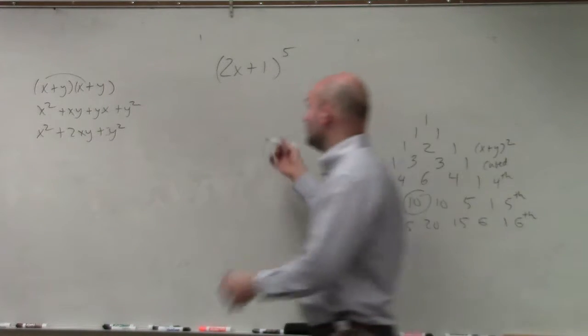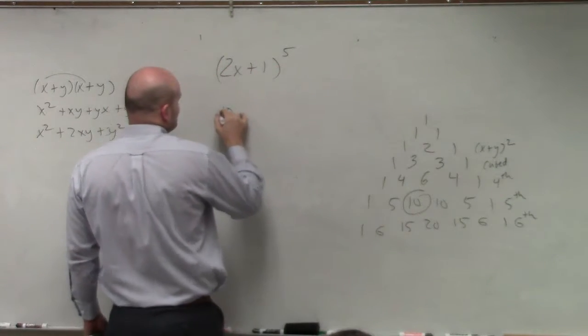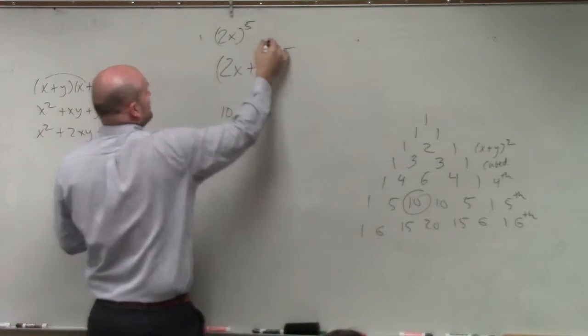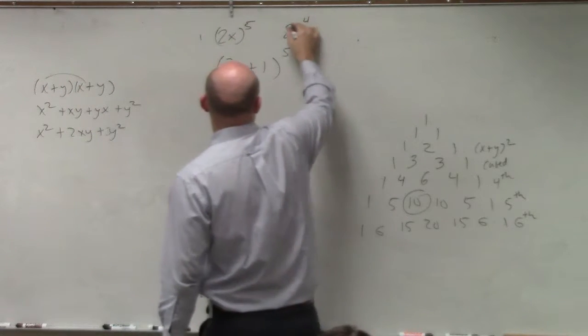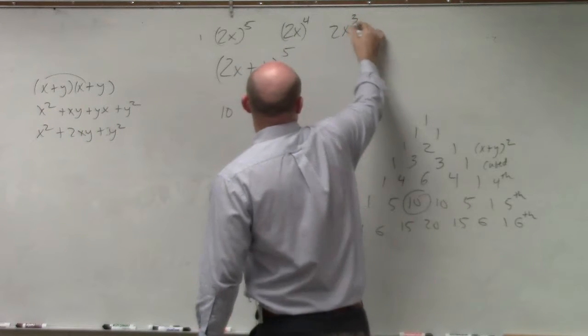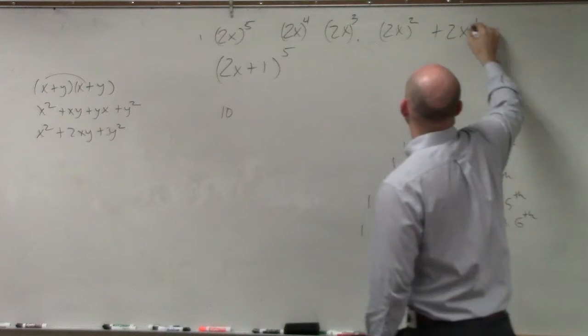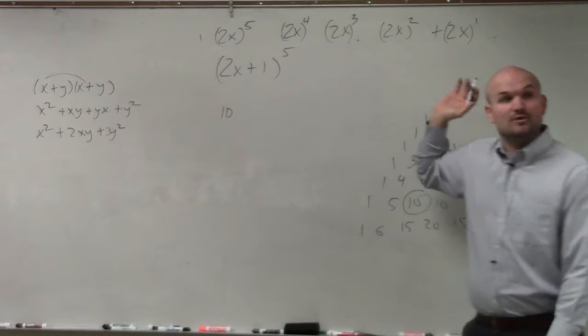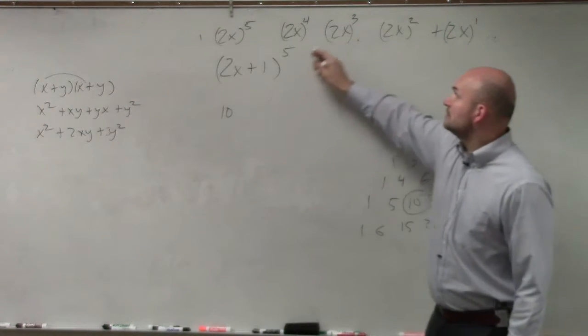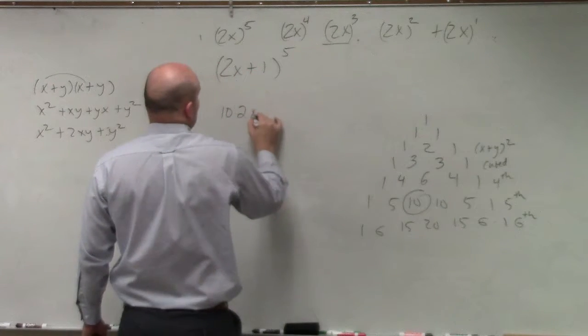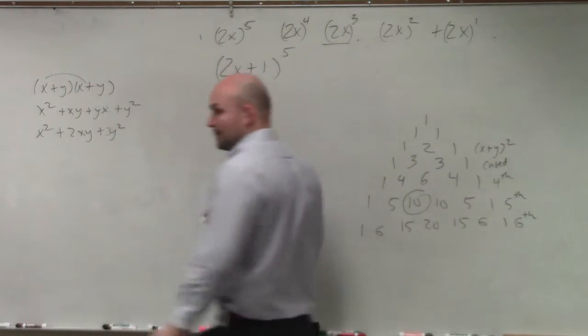So therefore, my term is going to be multiplied by 10. Now, remember the expansion, guys. Starts at 2x to the fifth, and then go 2x to the fourth, and then go 2x third, 2x squared, 2x to the first, and it goes all the way down to zero. Well, the third term is what? 2x cubed, right?